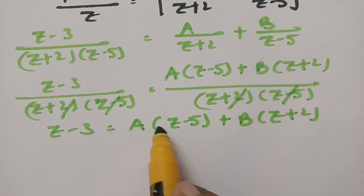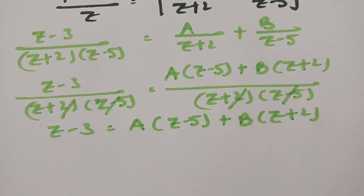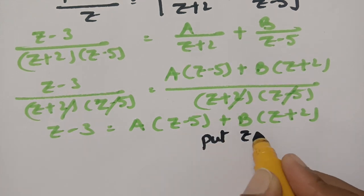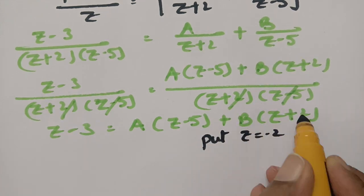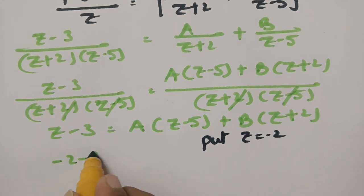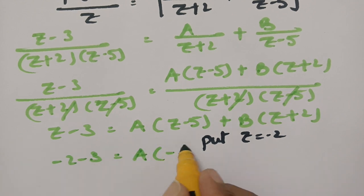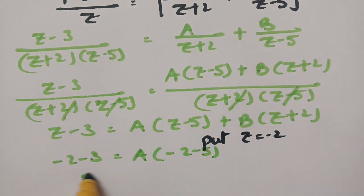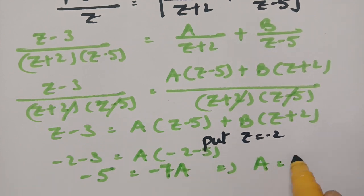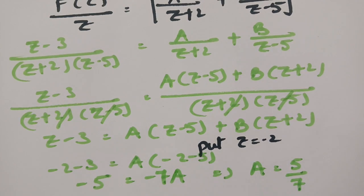If I make B equal to 0, I will get the value of A. For that, I put Z equal to minus 2. This gives minus 2 minus 3 equal to A times minus 2 minus 5, so minus 5 equals minus 7A, implying A is equal to 5 by 7.